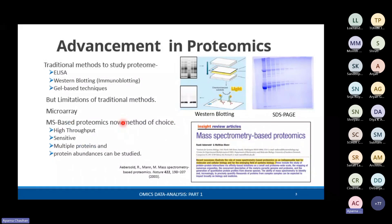First, I would like to discuss a little about the traditional methods. Earlier and even now, a lot of immunoblotting assays such as ELISA and Western blotting are used to study specific or multiple proteins, especially to find biomarkers in disease conditions. Also, gel-based techniques are used to separate proteins based on molecular weight or pH, after which specific proteins can be selected and studied. However, all these traditional methods are very labor-intensive and become very expensive at higher throughput, and the immunoblotting assays are antibody-dependent, which restricts the number of proteins that can be studied.